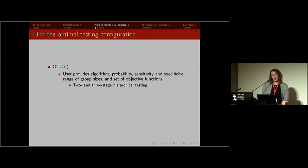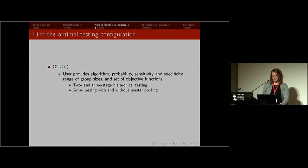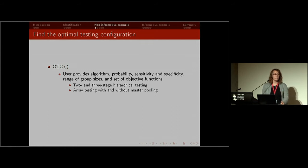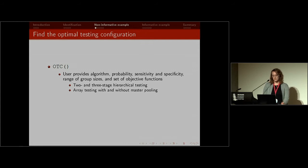As I mentioned, there's hierarchical testing. Two stage and three stage are the most commonly used, though there are some applications of four stage testing. This function currently only allows two and three stage. There's also array testing with and without master pooling. Array testing without master pooling is where you pool the rows and columns, and array testing with master pooling means you pool all 100 individuals in the array first and then go to row and column testing.